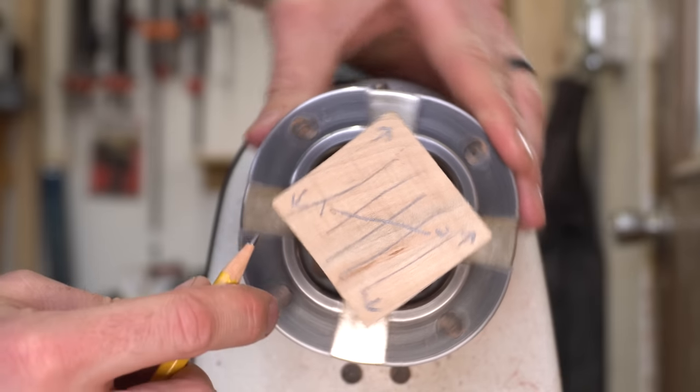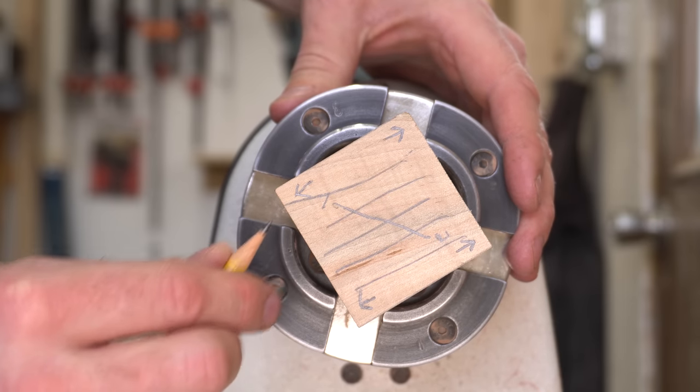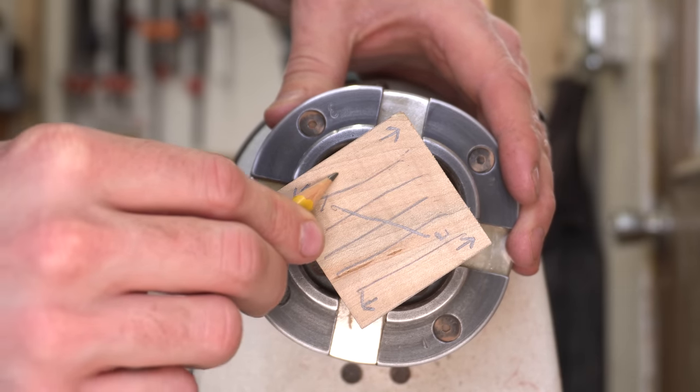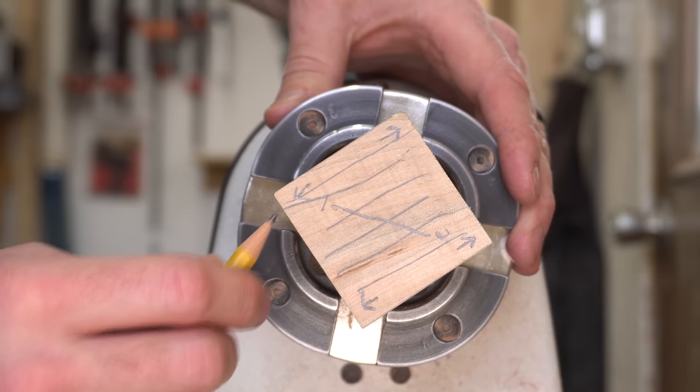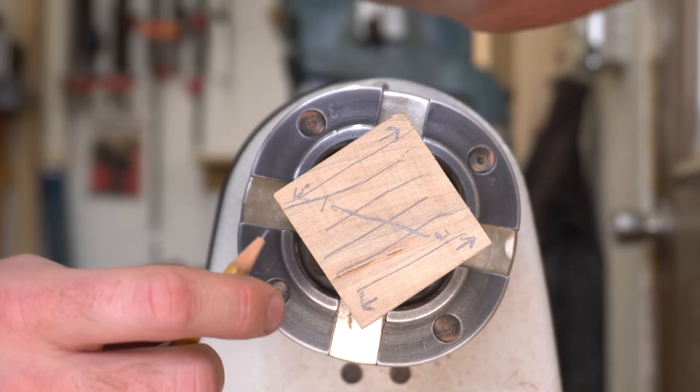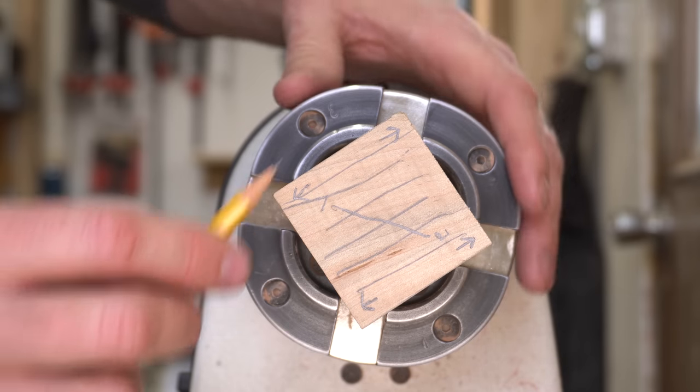Now if you can imagine this coming around and you push a little bit too deeply and you take a catch right here, you can see the grain runs the whole length of that, and a catch right here is liable to just pop that whole top off because it's going to run down the easiest line of travel, which is that grain.